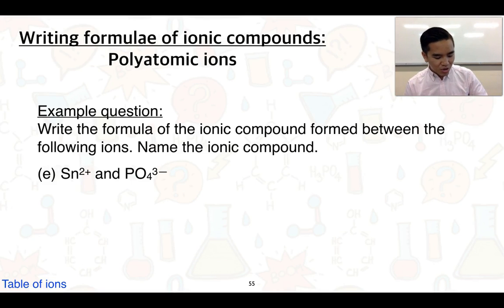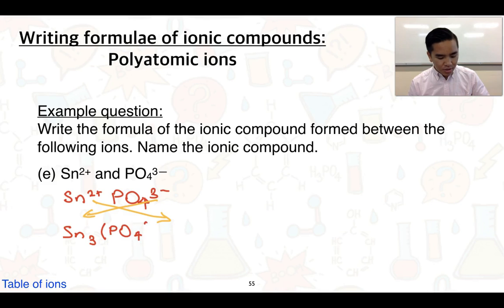And I believe this is the last one. So Sn2+ and PO43-. We've actually got a transition metal here, so this is a tin(II) ion and a PO43-, which is a phosphate. So let's go ahead and crisscross. We're going to end up with three lots of Sn and we need two lots of PO4, so put that in brackets as such. And when we name this, we also need to keep in mind the transition metal, so it can have variable charge. So this is going to be tin(II) phosphate.